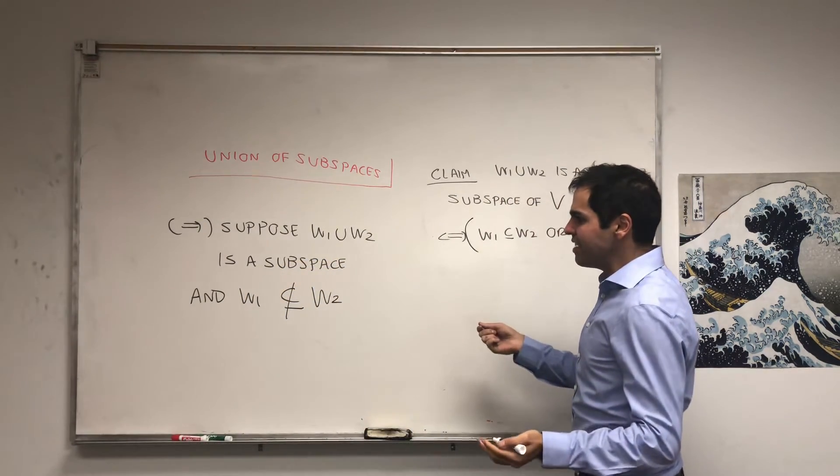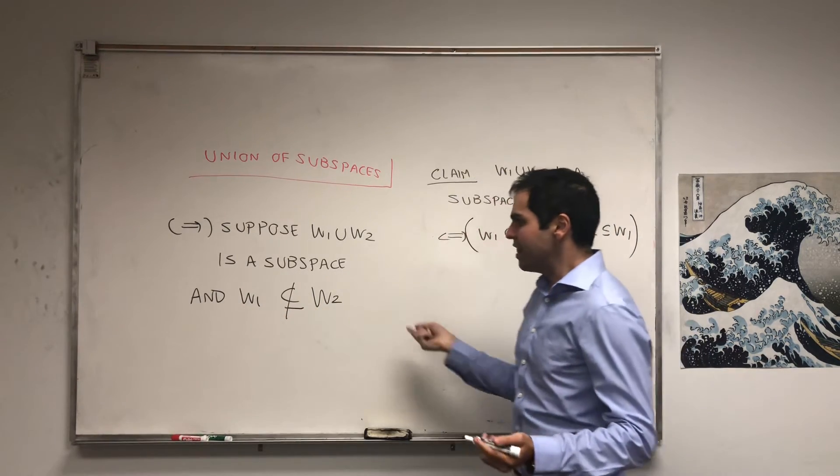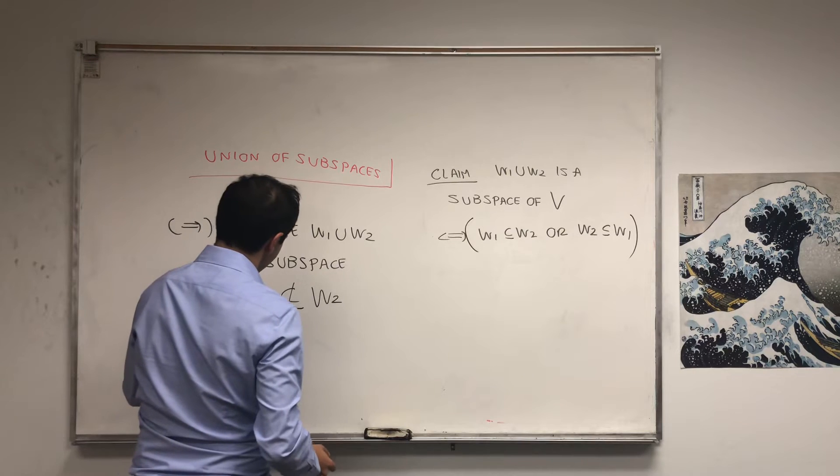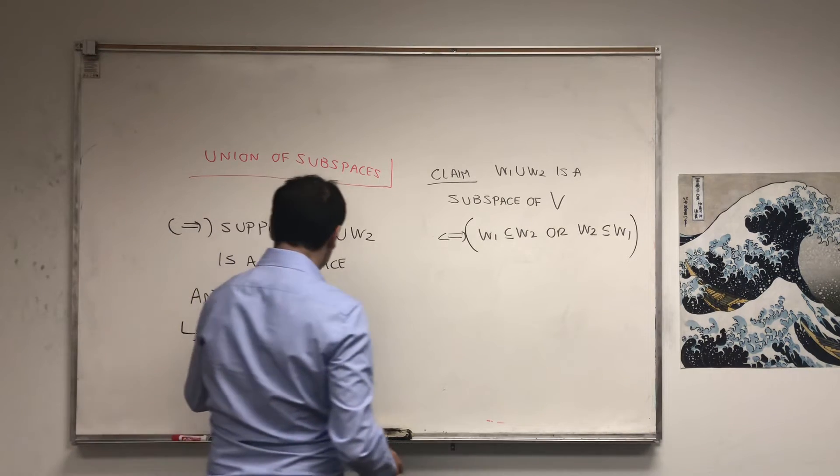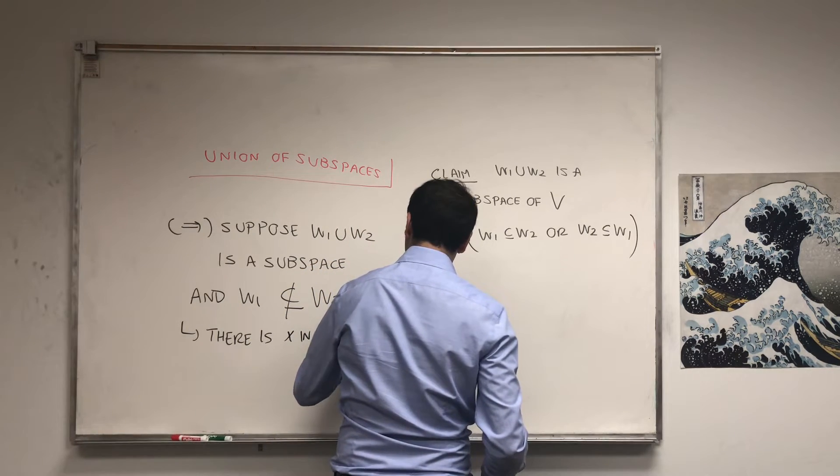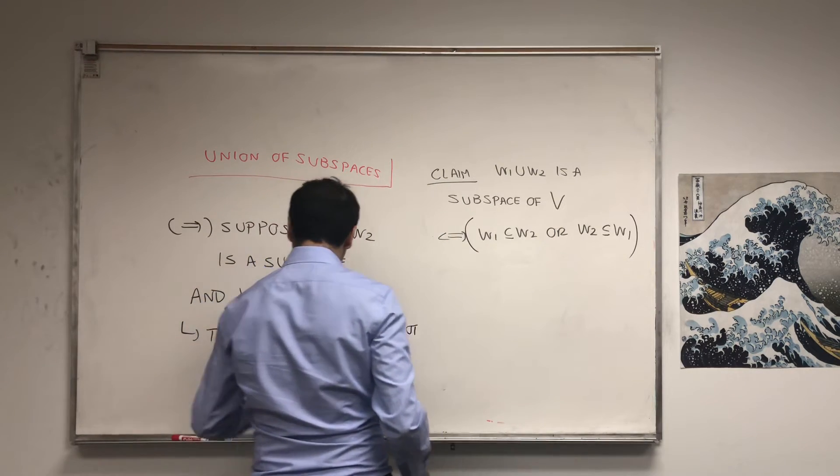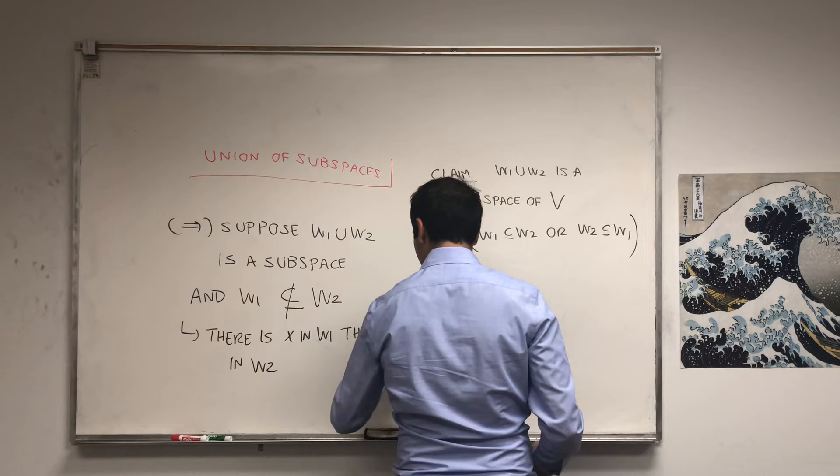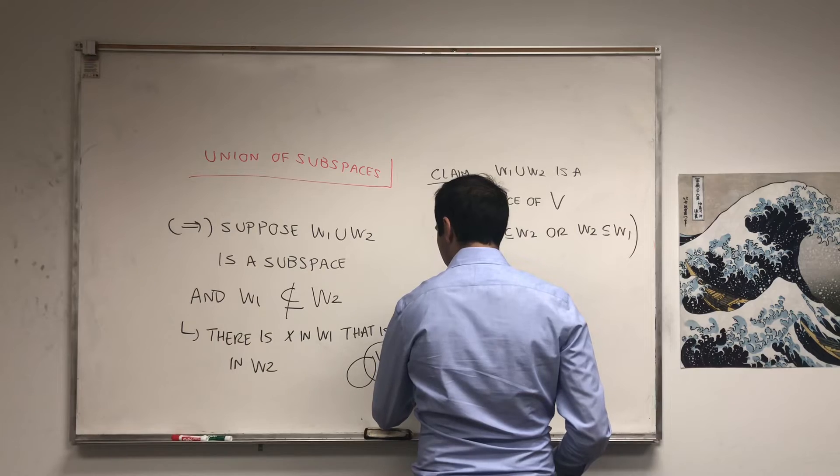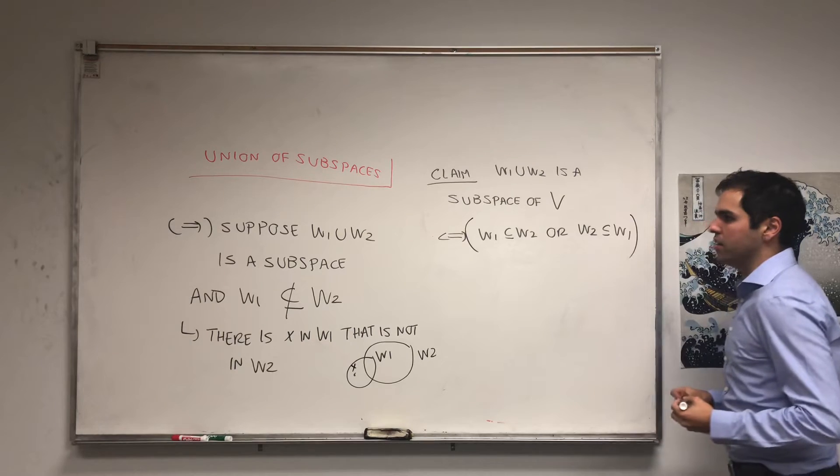And what does that mean? It means there exists an element in W1 that is not in W2. So there is x in W1 that is not in W2. So again, this is W1. And because it's not a subset, we have, for example, if this is W2, there is some x in that space that is not in W2.